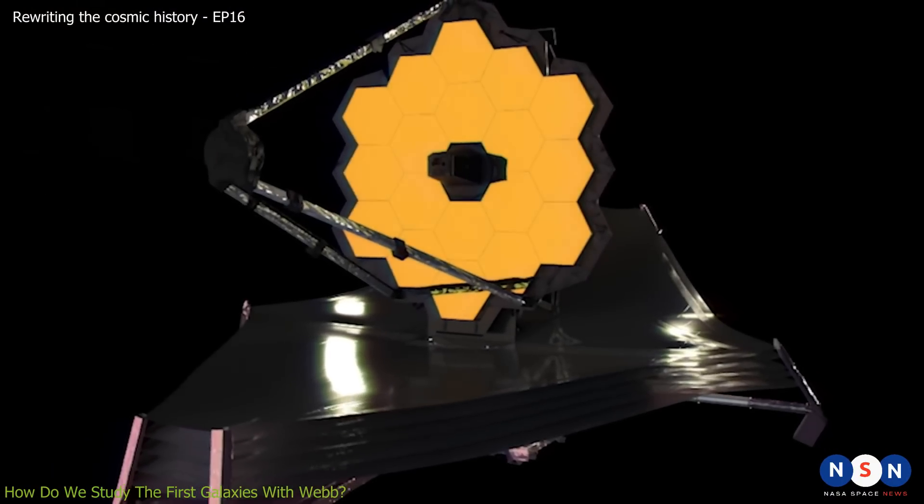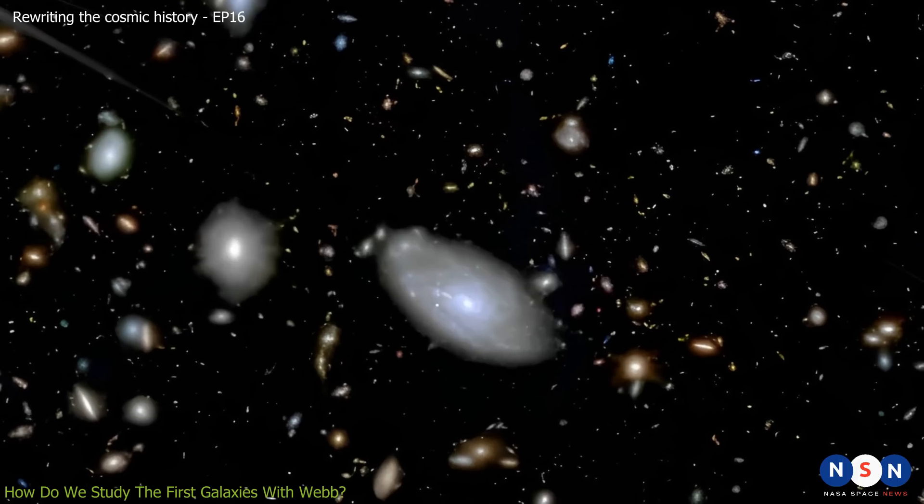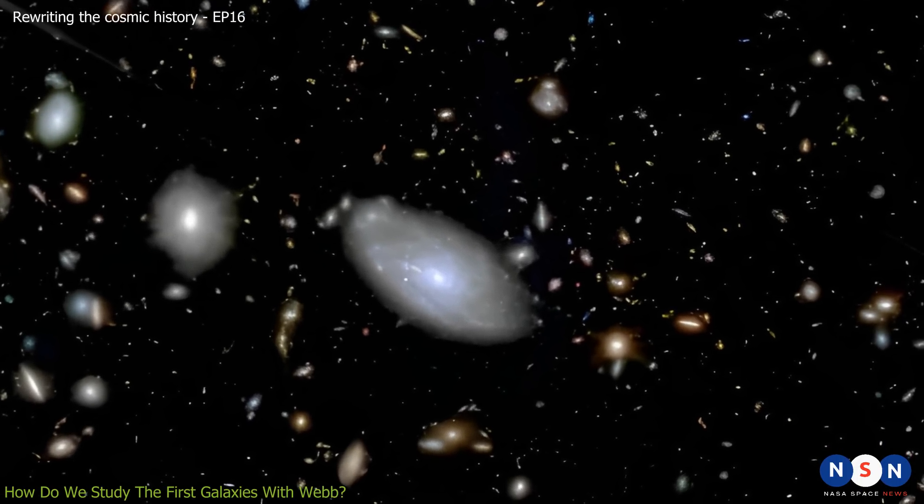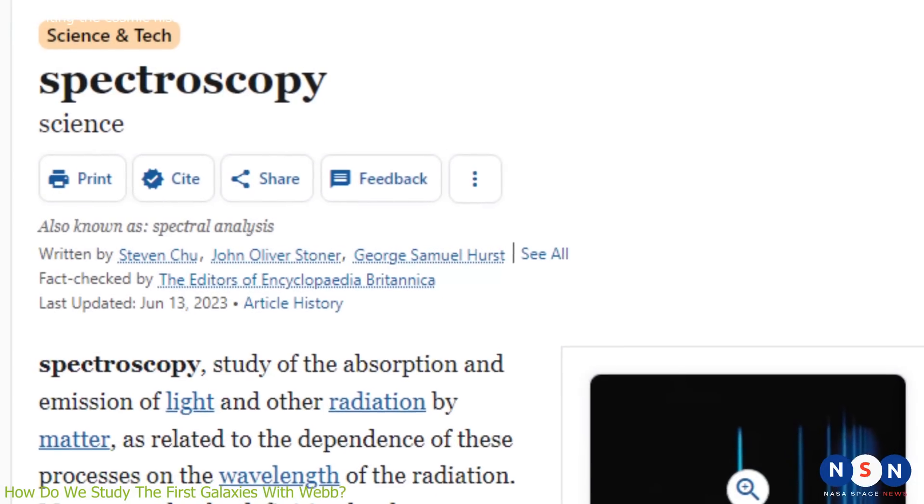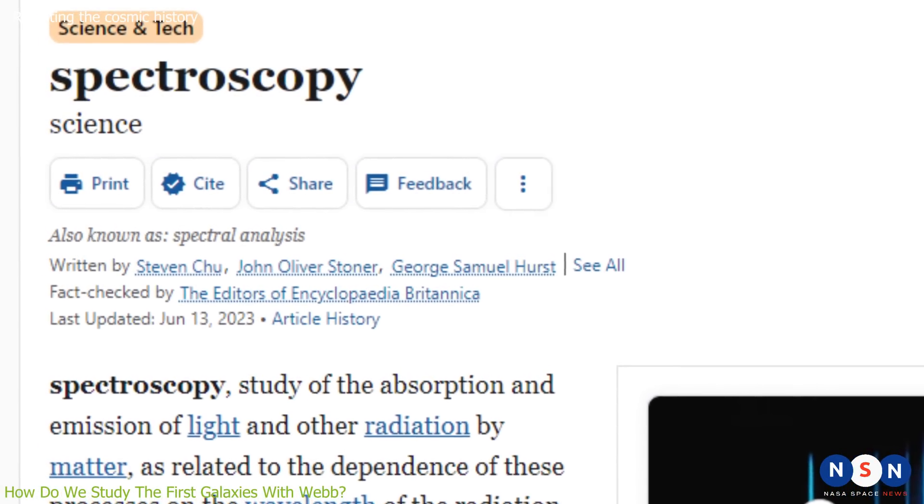Webb has surpassed these records, and opened a new window into the early universe. Another question you may have is, how do we know what these galaxies are made of? How can we tell their composition and temperature from their light? The answer lies in another phenomenon called spectroscopy.